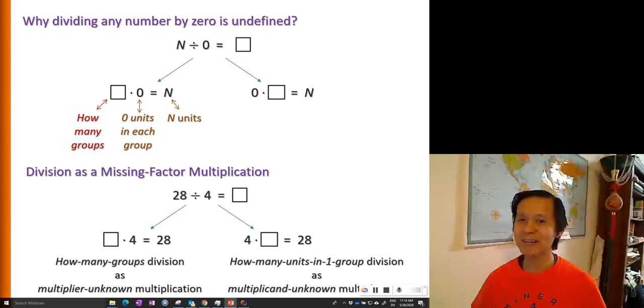So that's why N divided by zero is undefined. Because there's no finite number that times zero will give you N.